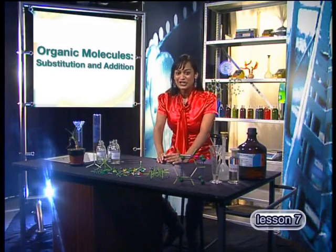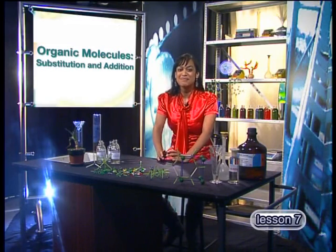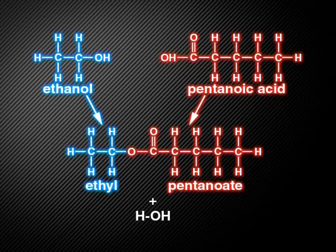We are now going to learn some specific ways in which these amazing organic molecules are made. Earlier in the series, we learned how two smaller compounds could be used to make a different molecule with very different properties. This reaction showed us one of the ways that the functional groups on organic molecules change to produce a new molecule. We mustn't forget that the functional group is what gives an organic molecule most of its character, and the functional groups interact with other chemicals around it.